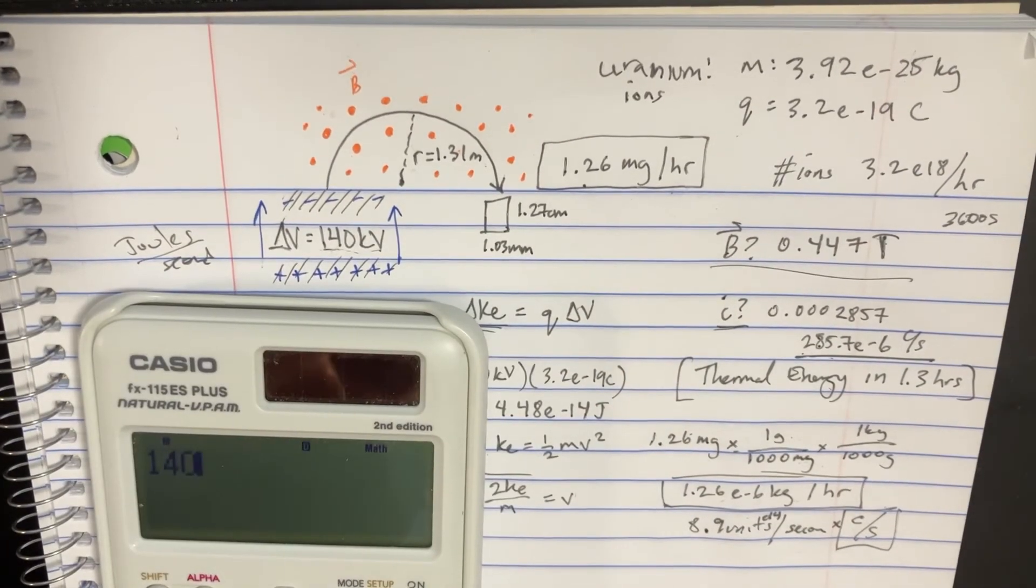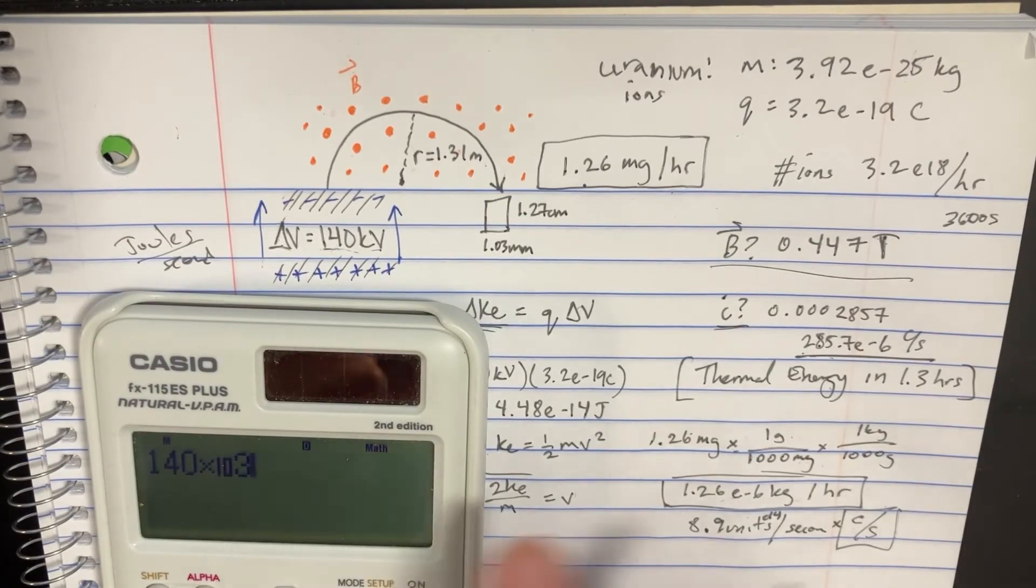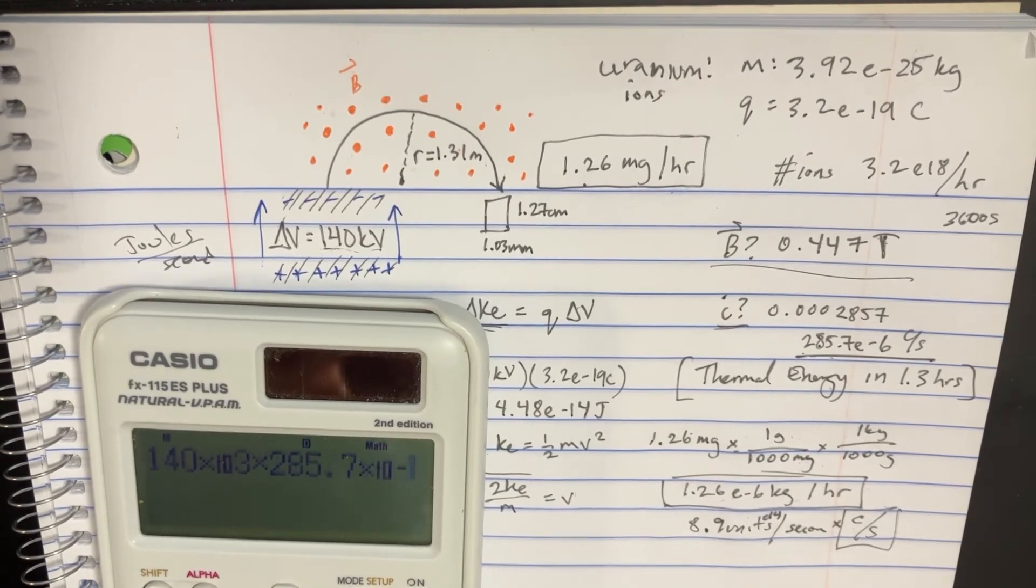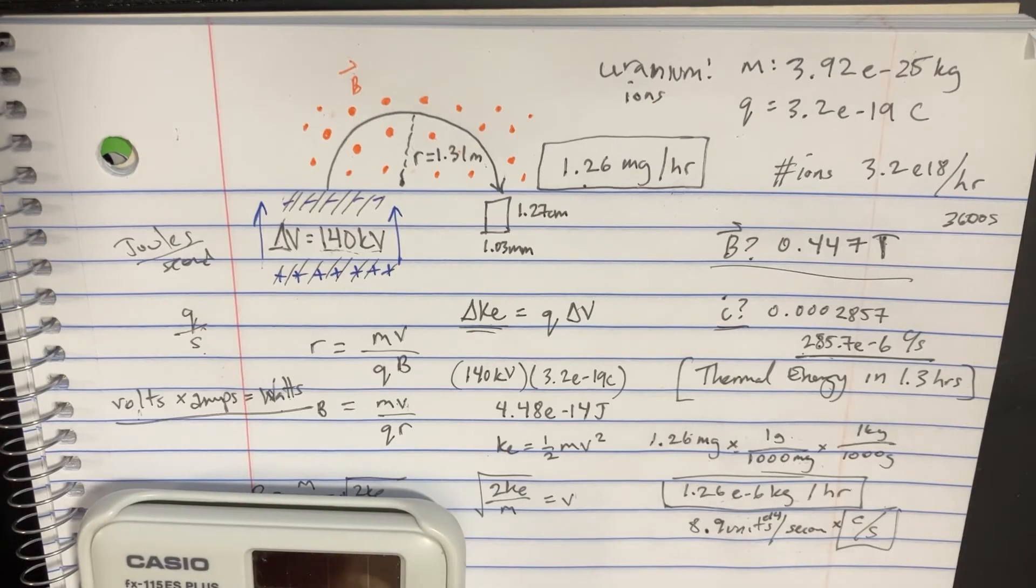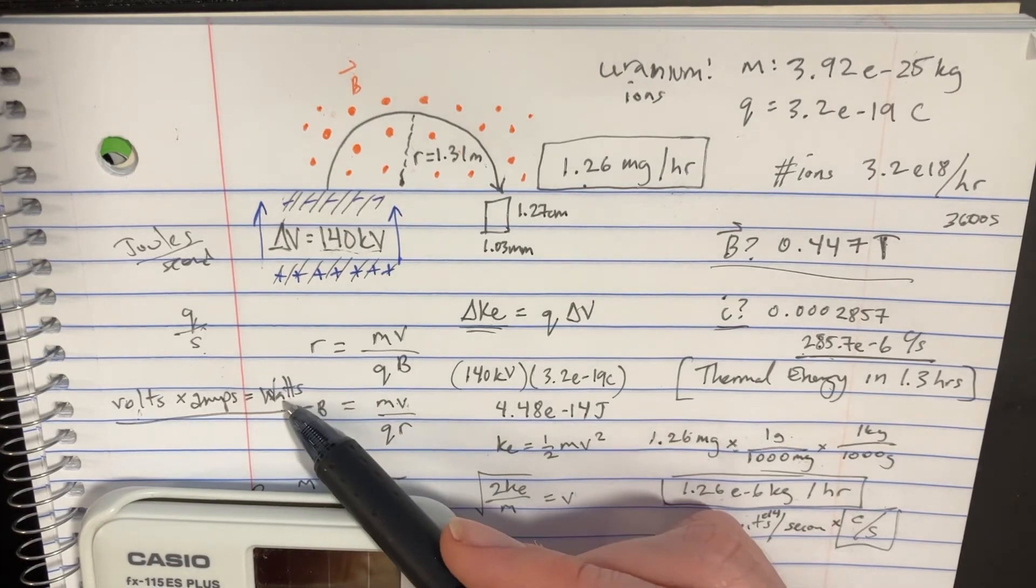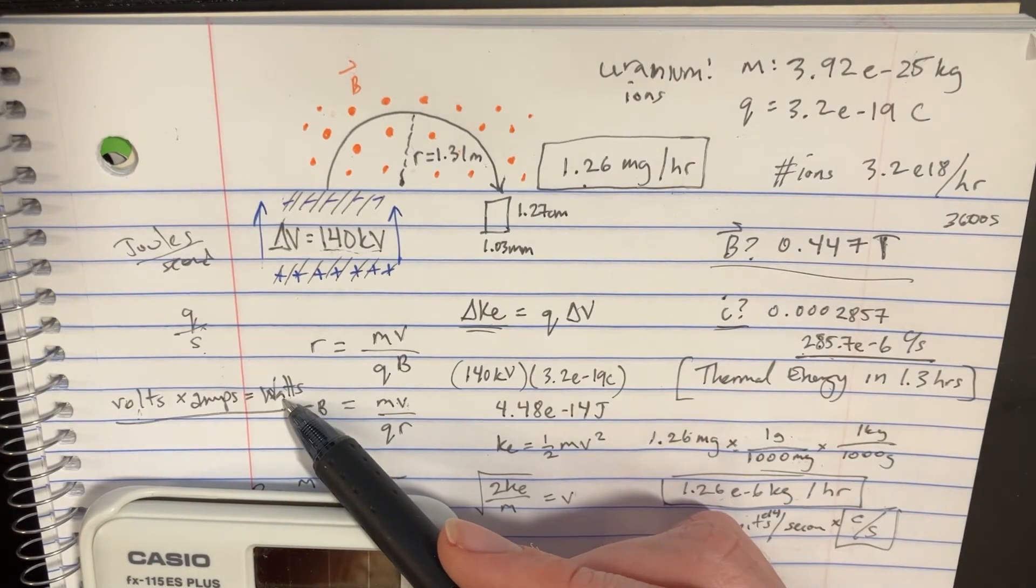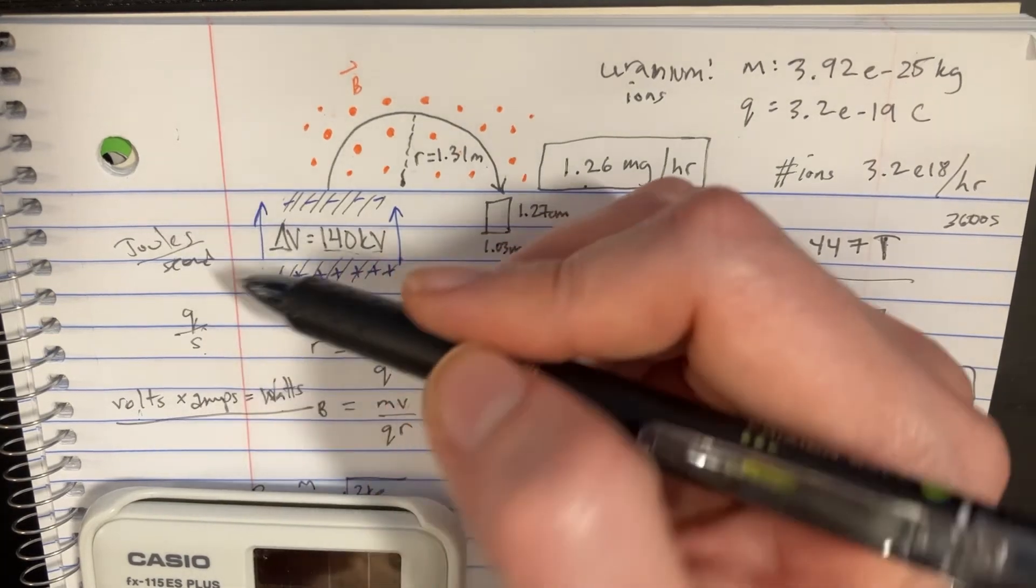We'll multiply those two things together. That's going to be 140 kV times our current which is 285.7 negative 6. That's going to give us the watts that we have, the wattage.